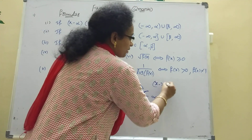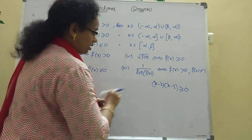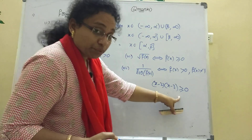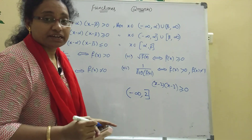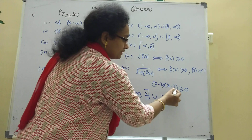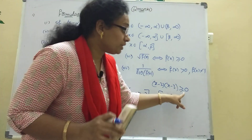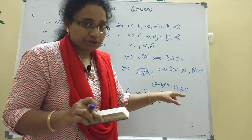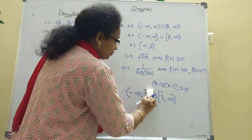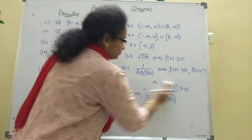For example, (x - 2)(x - 3) ≥ 0: how to write the answer? From minus infinity to 2, where alpha is 2, and since greater than or equal to is there, closed bracket is written. For infinity, you always write open bracket. Then union 3 to infinity — 3 gets closed bracket, infinity gets open bracket.